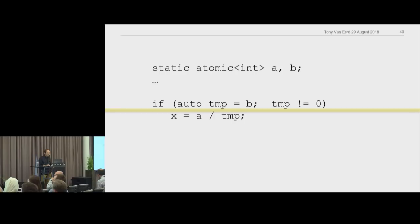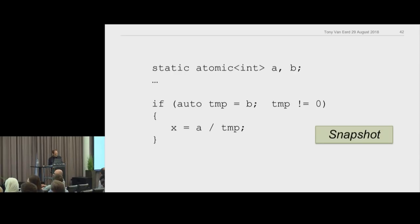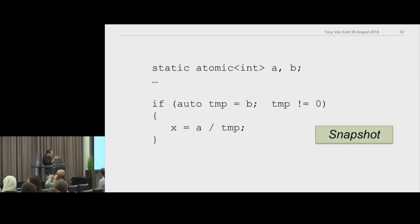There's no gap anymore. What you're doing is taking a snapshot of B at a point in time. Inside the curly brackets, you're working on this stale value of B, and you have to make sure your algorithm is fine with that stale value. Also note you haven't read A yet — so you're not reading A at the same time as B. If A and B are related, like a ratio, this code is not reading a snapshot of that ratio because it does two reads at two different times.